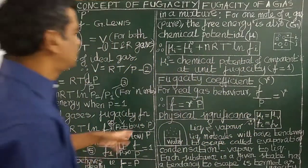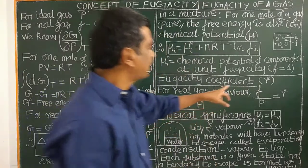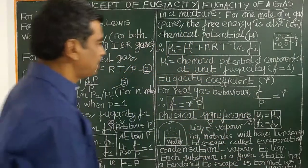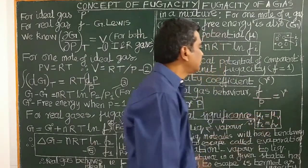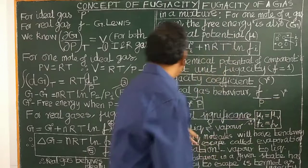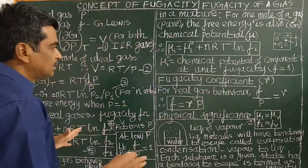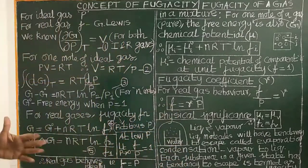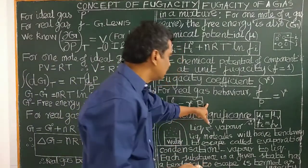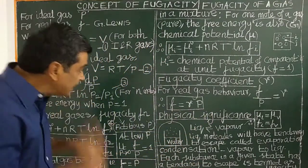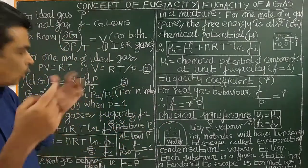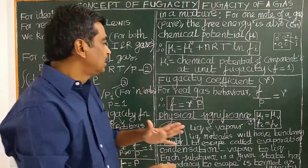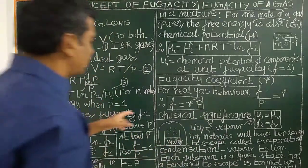What is the fugacity coefficient? It is represented by gamma (γ). It is the ratio of fugacity to the pressure of the gaseous substance: γ = f/P. Therefore, f = γ·P — the fugacity of a gas is directly proportional to its pressure. For ideal gas, or for real gas at low pressure, γ = 1, meaning f = P. At low pressure, the real gas becomes ideal gas and γ equals 1.